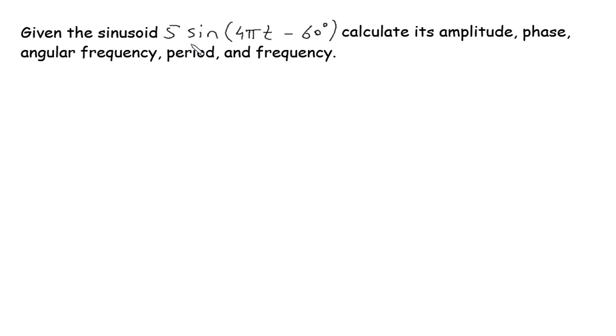Given the sinusoid 5 sin(4πt - 60°), calculate its amplitude, phase, angular frequency, period, and frequency.